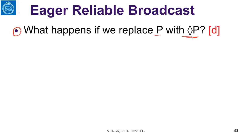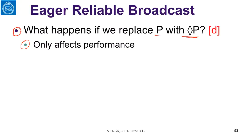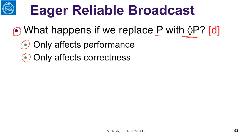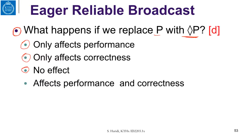So here is the question, and we have the possible answers. If we replace P by ◇P, does that affect only the performance of the algorithm, or does it only affect the correctness of the Lazy Reliable Broadcast algorithm, or it has no effect, or it affects both performance and correctness?